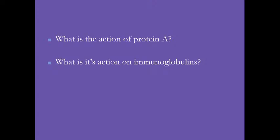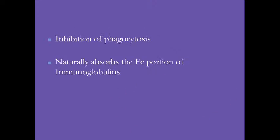What is the action of Protein A? Protein A inhibits phagocytosis. It has an affinity for the Fc portion of immunoglobulins — whether IgM, IgG, or IgA — and absorbs it. The Fc fragment normally acts as an opsonin recognized by phagocytes. By absorbing the Fc portion, Protein A prevents opsonization and phagocytosis.